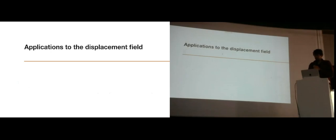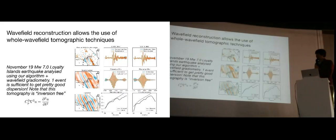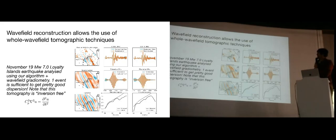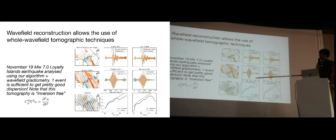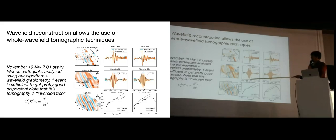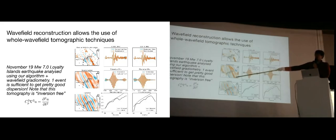Now for some applications. The first applications were for the displacement wave-field — looking at the displacements or velocities directly. One nice application of wave-field reconstruction is that it allows us to use whole wave-field tomographic techniques that are simpler to implement and require less inverse-problem machinery than traditional tomography. We looked at a single propagating Rayleigh wave across the SESN array, calculated the wave-field, and used the observation that a single-mode Rayleigh wave propagates approximately like the acoustic wave equation with a known phase velocity. If you have access to the Laplacian of the wave-field, you can do a linear regression to get the phase velocity squared directly from that equation.